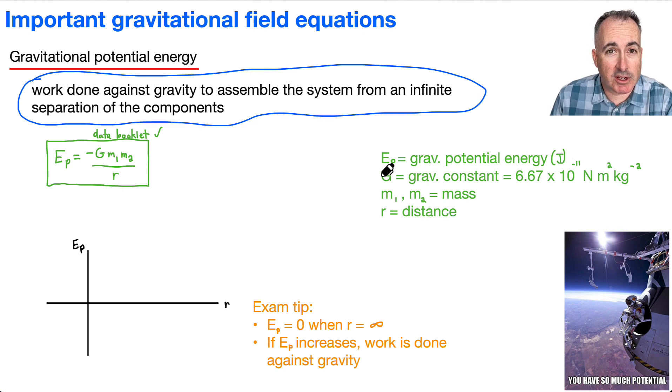We of course have our capital G, our gravitational constant. Now m1 and m2, those are the different masses, so that's going to be in kilograms. And we're going to have r as the distance that you've moved them, so that's going to be in meters.